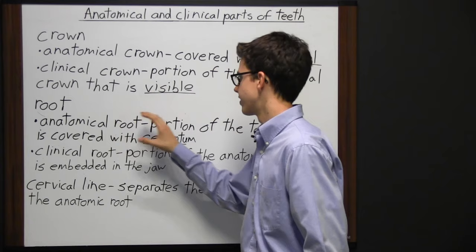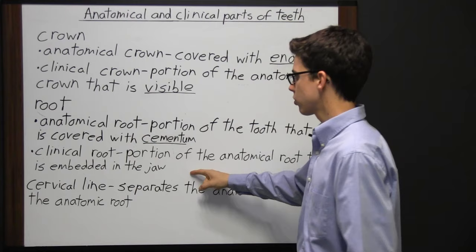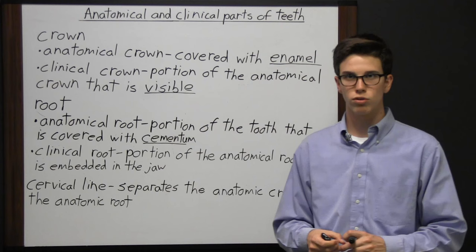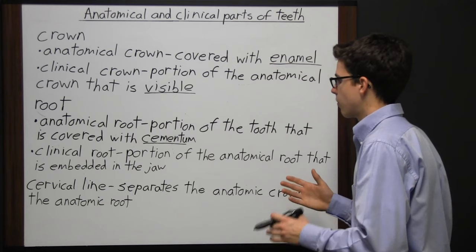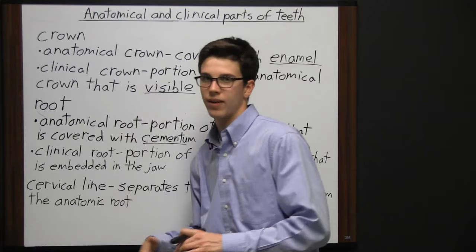The anatomical root is always going to be the part of the tooth covered with cementum. However, the clinical root could change — in a patient with advanced bone loss, the clinical root may be reduced in size. Someone may also have a receding gum line.